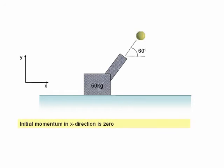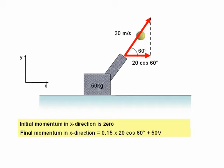The initial momentum in the x direction is zero. The final momentum in the x direction is equal to the mass of the baseball, that's 0.15, times the component of its velocity in the x direction, which is 20 times cos 60 degrees. Plus the mass of the pitching machine, 50, times its velocity after firing.